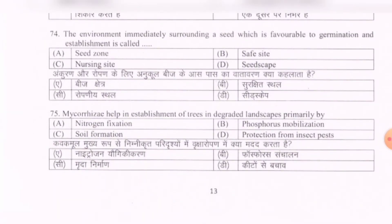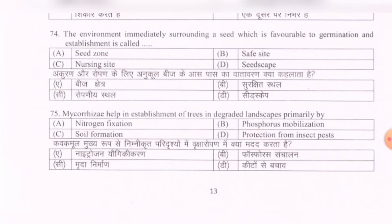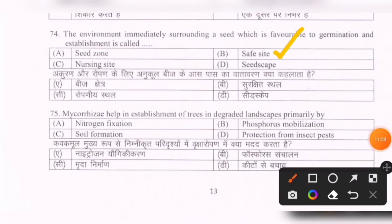Next question: The environment immediately surrounding a seed which is favorable to germination and establishment is called — options are: seed zone, safe site, nursing site, seedscape. The correct option is B — safe site.